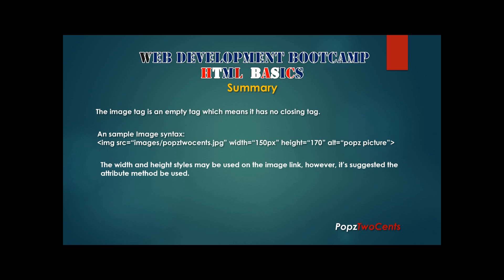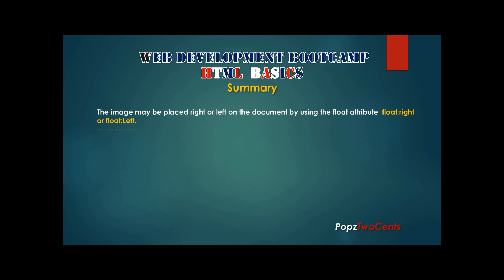Here is a sample image link: you need the opening tag, the path/source, the size of the image, and the alt attribute. The width and height styles may be used, however it is suggested that the attribute method be used instead. The image may be placed to the right or left on the document using float:right or float:left.